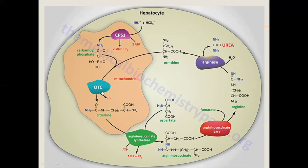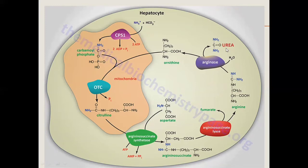The five-step reaction involves five enzymes: carbamoyl phosphate synthetase 1, ornithine transcarbamylase, arginosuccinate synthetase, arginosuccinate lyase, and arginase. These five enzymes are involved in urea synthesis, converting the toxic ammonia into the less toxic substance urea through a series of reactions for elimination from the body.